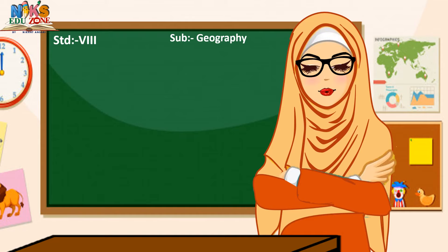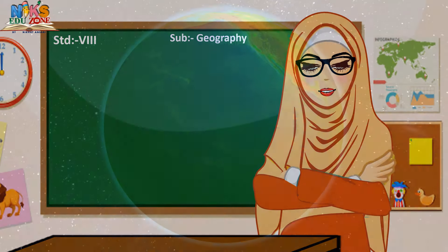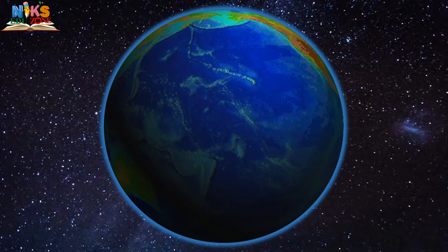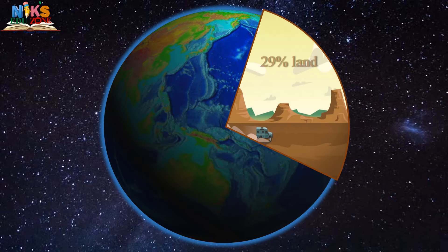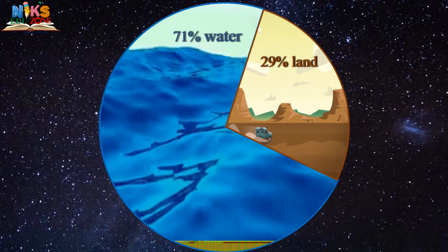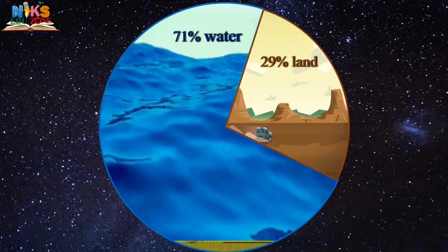Hello dear students, hope you all are fine. Children, have you ever been to the ocean floor? Today we will go under the ocean and see the various landforms submerged under the water. We know that the proportion of water and land is not equal on the earth — around 71% of the earth's surface is covered by water.